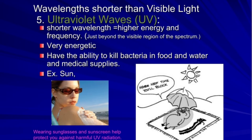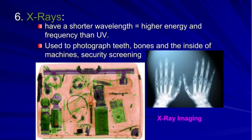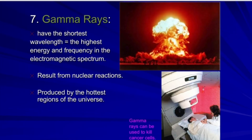Ultraviolet waves are shorter than visible light — shorter wavelength but higher energy and frequency. X-rays have an even shorter wavelength, higher energy and frequency than ultraviolet, and are used to photograph teeth, bones, and the inside of machines, as well as for security screening. Gamma rays have the shortest wavelength and the highest energy and frequency in the electromagnetic spectrum. They result from nuclear reactions and are produced by the hottest regions of the universe. Gamma rays can also be used to kill cancer cells.